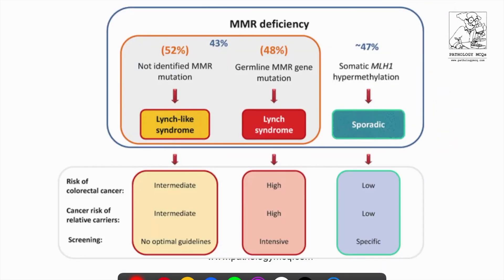As far as MMR deficiency is concerned, Lynch-like syndrome 52%. I already told you that in Lynch-like syndrome all the clinical features will be there, but no mutation will be identified either in germline or in sporadic areas, but some genetic mutation is there which we are not able to quantify yet. 48% of the cases, what we might see is a germline MMR mutation, which correlates very well with Lynch syndrome.